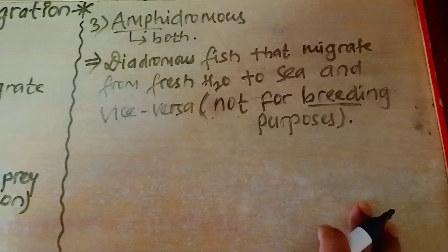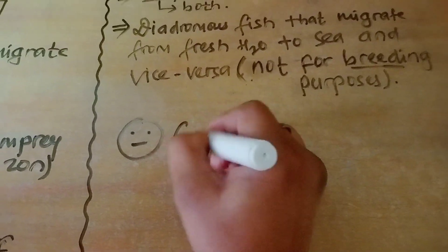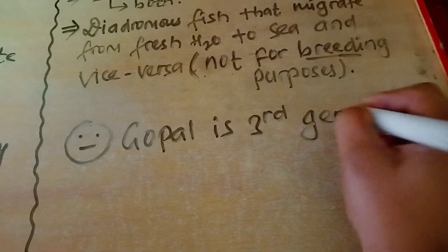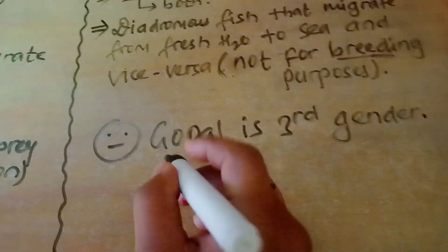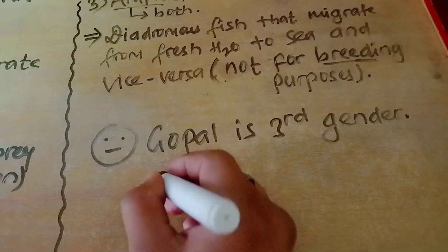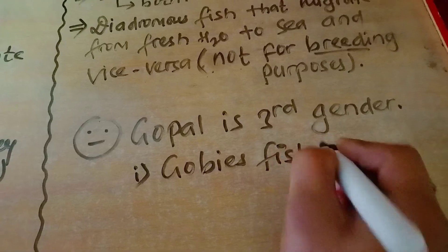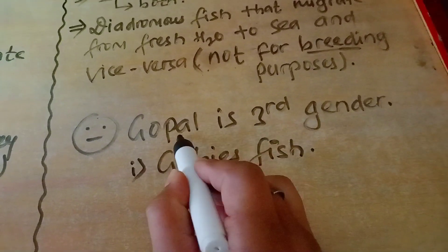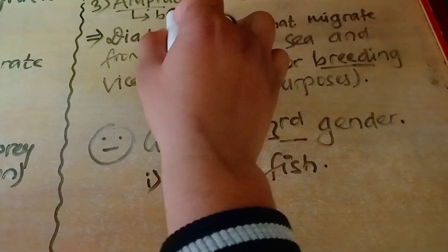For the example of amphidromous, remember this trick: 'Gopal is third gender' — it's only a memory trick and not meant to hurt anyone. Related to Gopal, the fish name is goby fish — G for Gopal, B for goby (just replace P with B). So goby fish is amphidromous.